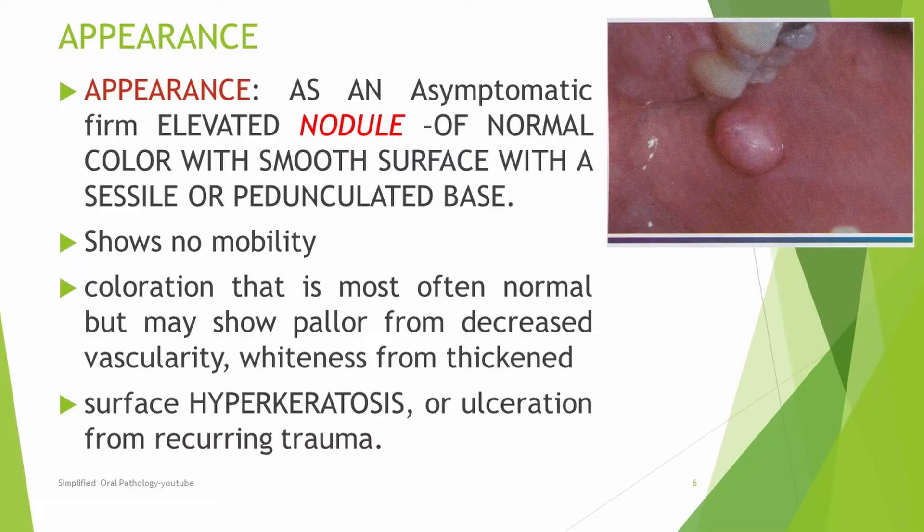It is more prevalent in females than males, though this has no diagnostic significance. It is found between 30 to 50 years and is not found in younger individuals. Fibroma appears as an asymptomatic firm elevated nodule of normal colour with a smooth surface and a sessile or pedunculated base.